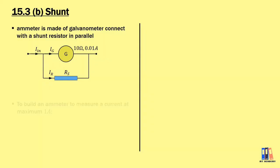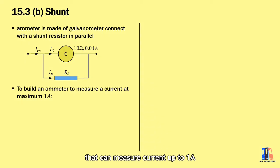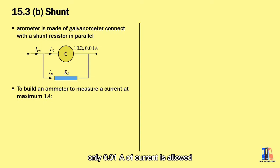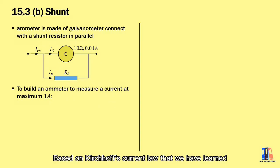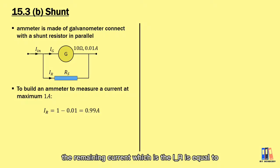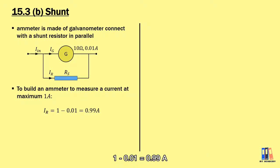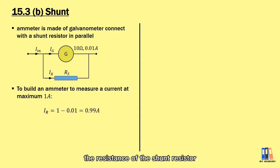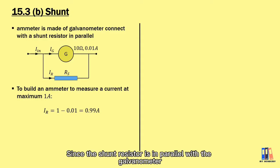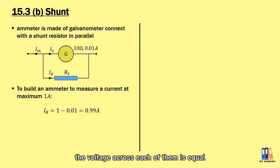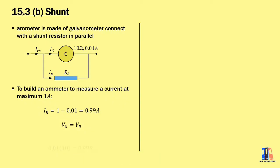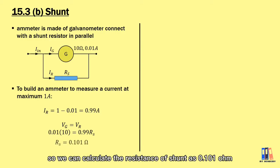Let's say we have a galvanometer with a resistance of 10 ohms and a maximum current — also known as full-scale deflection — of 0.01 ampere. If we want to build an ammeter that can measure current up to 1 ampere, only 0.01 ampere is allowed to flow through the galvanometer, or else it will burn. Based on the division of current, the remaining current through the shunt is 1 minus 0.01, equal to 0.99 ampere. Since the shunt is in parallel with the galvanometer, the voltage across each is equal. Applying V = IR, we calculate the resistance of the shunt as 0.101 ohm.